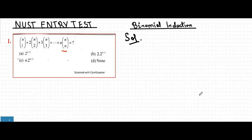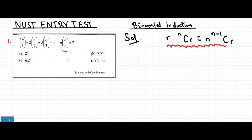To understand this, we need to know one key property: r·nCr can be written as n into (n-1)C(r-1). In the question we have r·nCr — we have 1 here, so this is r, and similarly 2 and 2, 3 and 3. We can write all terms in this form.